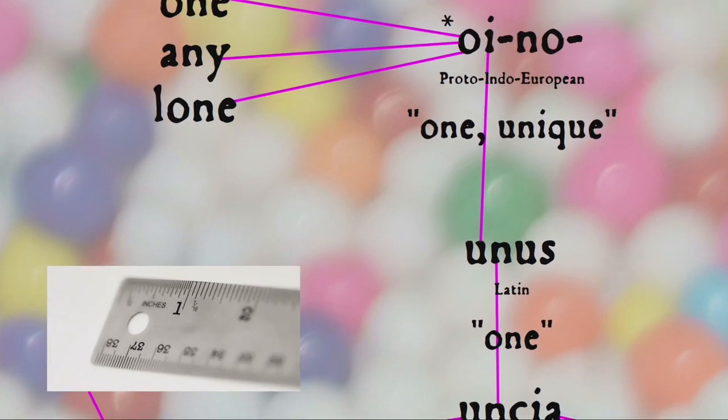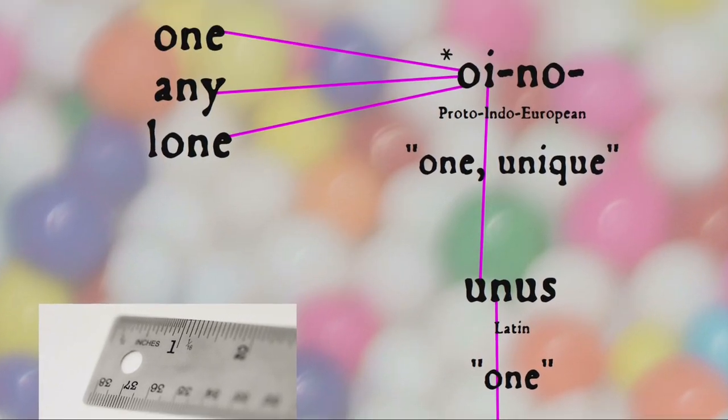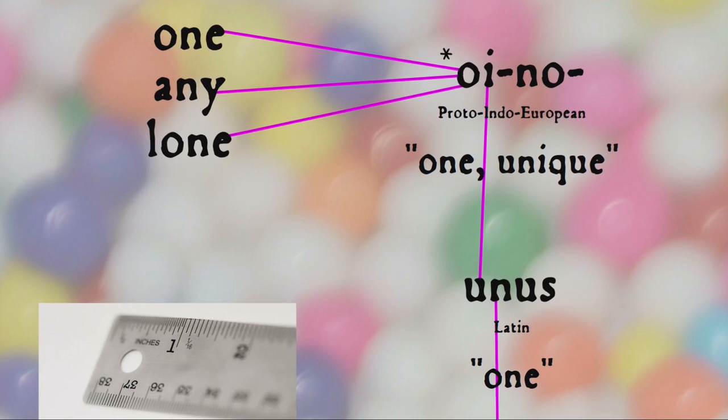meaning one, and is cognate not only with English 'one', but also 'any', 'lone' — one really is the loneliest number — and 'ounce', another unit of measurement.